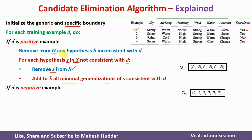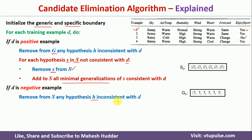If the example is negative, first we go to the specific boundary S and check whether each hypothesis there is consistent or inconsistent with the current example. If it is consistent, we do nothing. If the hypothesis is inconsistent with the current example, we remove that particular hypothesis from S.